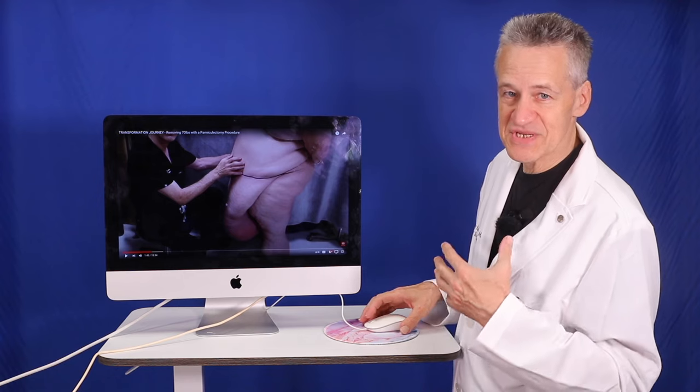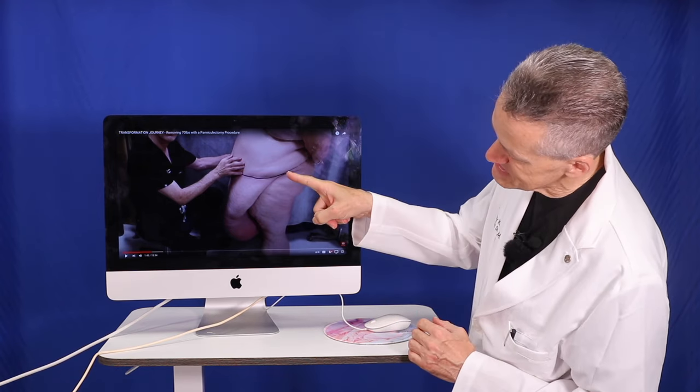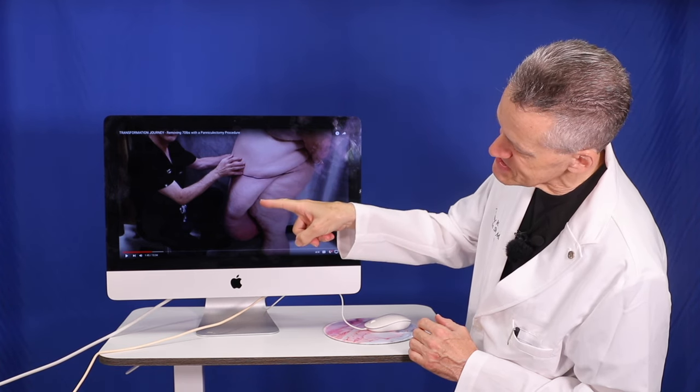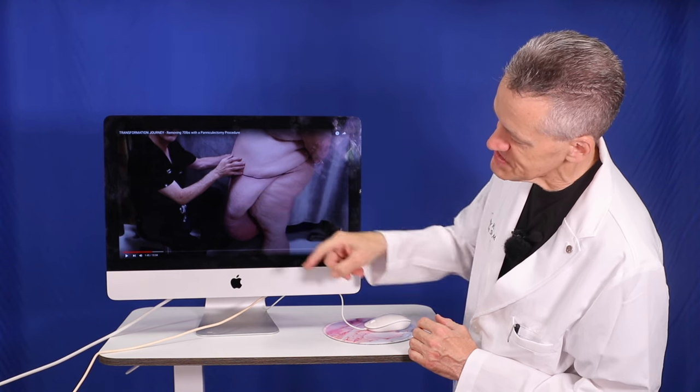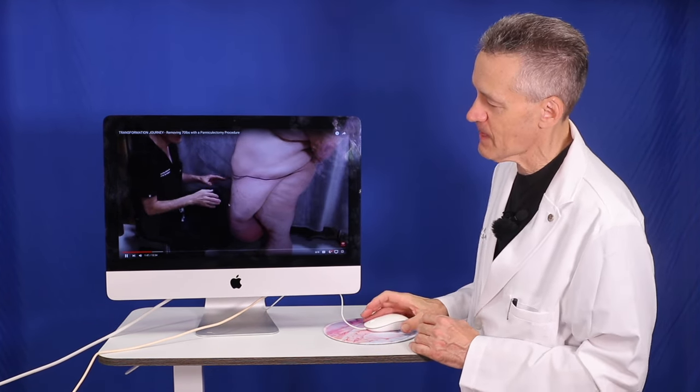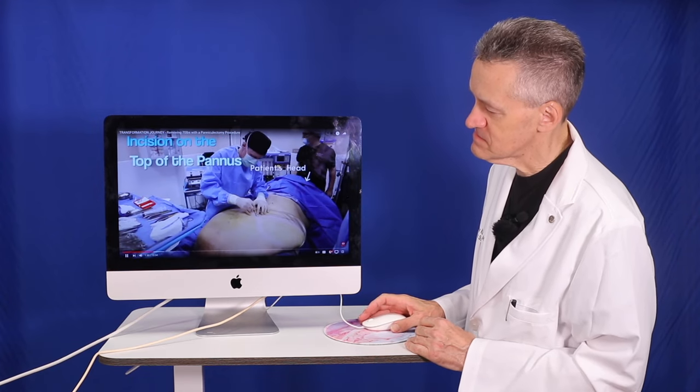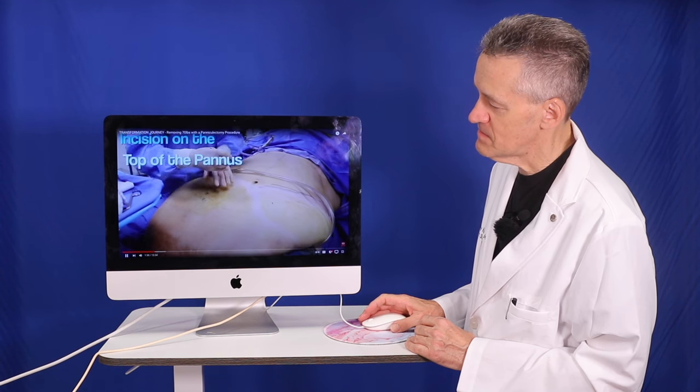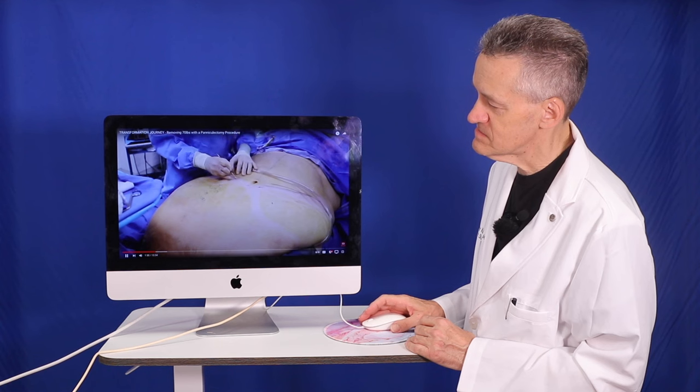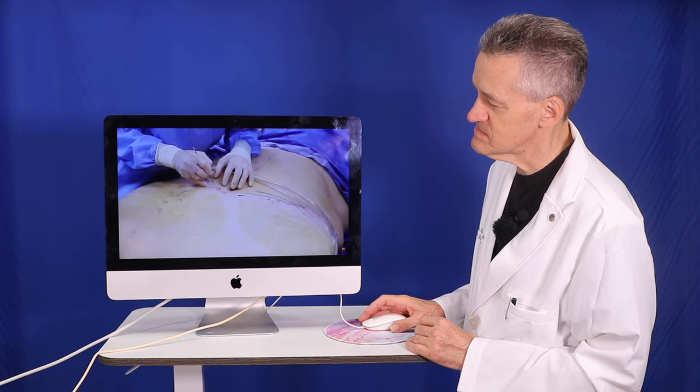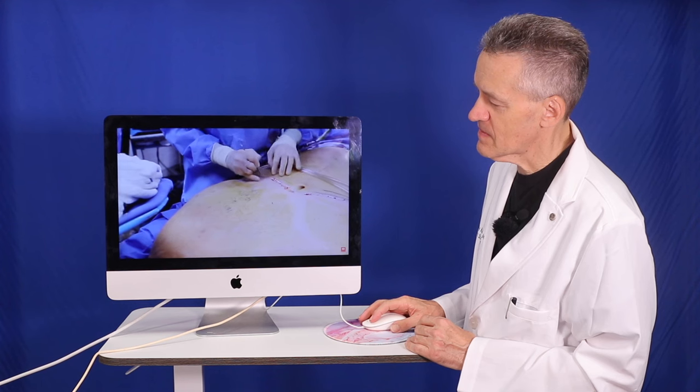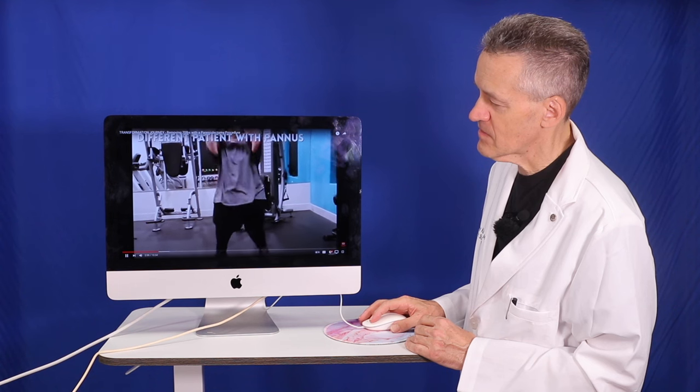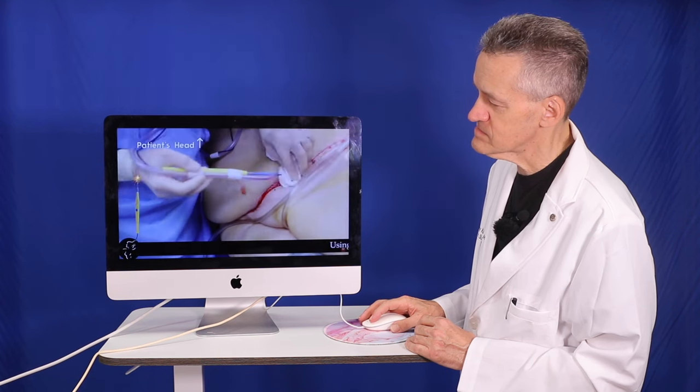Just imagine how difficult it was for him to get out of bed. The pannus pretty much completely covers his upper thigh and goes all the way down to his knee. You can see the discoloration from the white portion to this darkened red portion. Can you imagine how difficult it is to exercise or try to lose weight with this pannus?